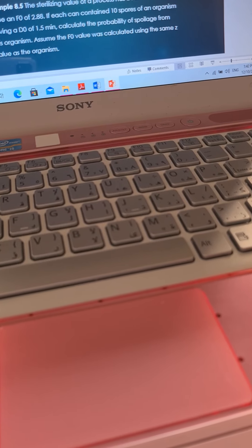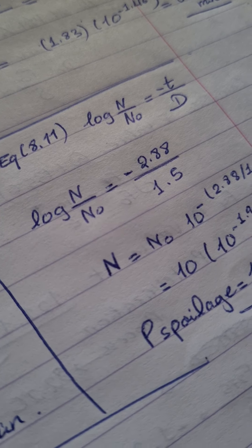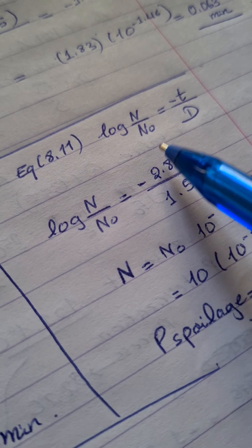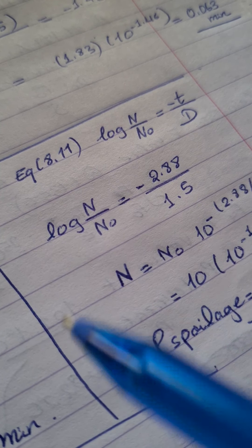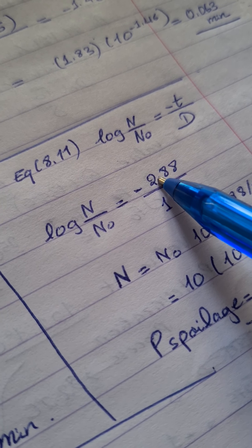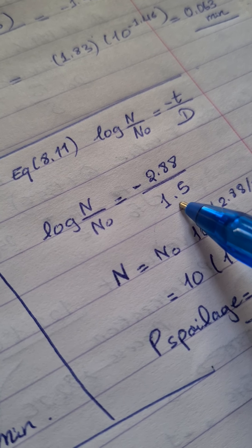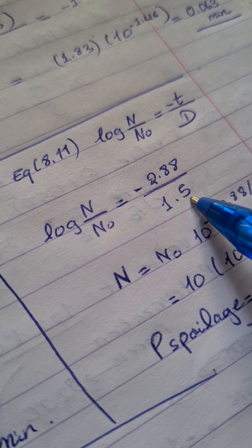So it is the F0 that is given. So using this equation, which is log N over N0 equals minus T over D. I've got the T, which is 2.88, over the D that is given to us, 1.5.